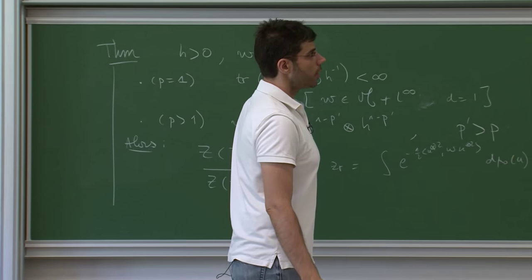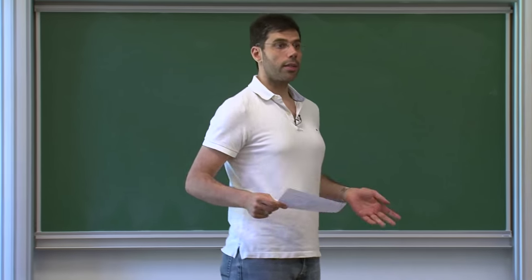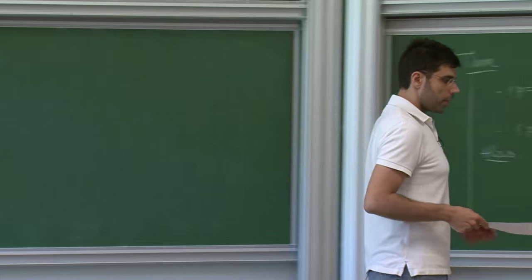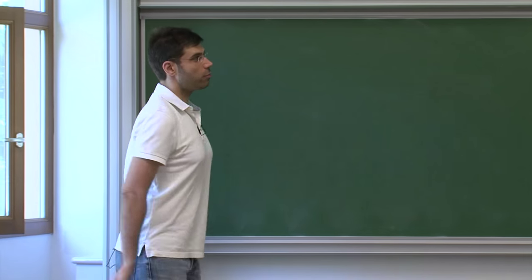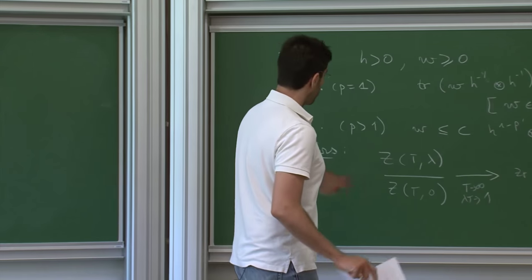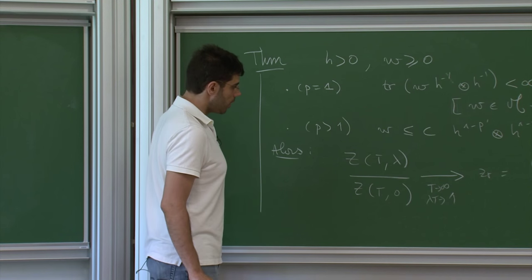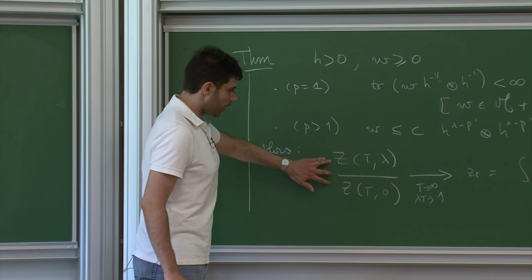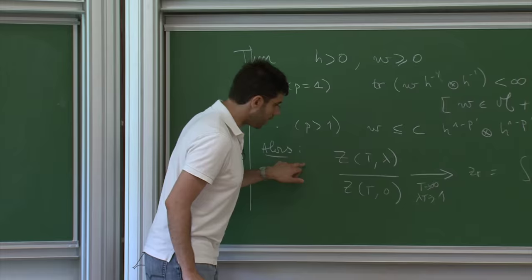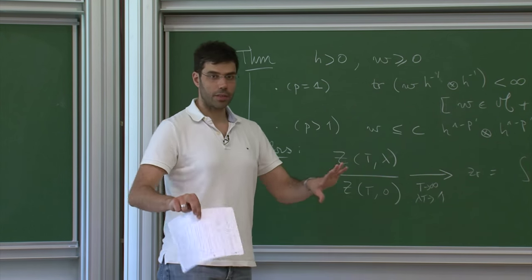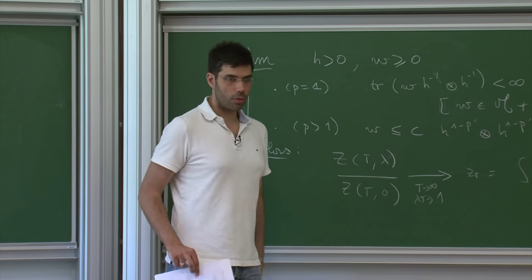En dimension finie, on peut démontrer ce résultat en utilisant le principe variationnel de Gibbs et les inégalités sur l'entropie apprises la semaine dernière. Pour la dimension infinie, on doit traiter directement le quotient des deux fonctions de partition. L'astuce consiste à écrire un problème variationnel qui traite le quotient directement, au lieu de soustraire deux problèmes variationnels séparés.